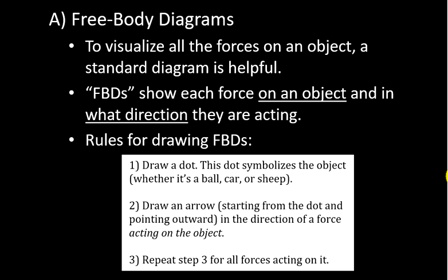All free body diagrams start with you drawing a dot. You make a dot kind of like this. And that represents the object. This is what we're going to make instead of drawing a car or drawing a spaceship or drawing a cow, whatever the object is. And then from this dot, we will draw arrows to show forces.